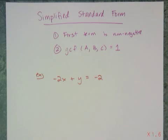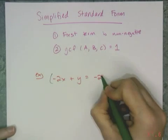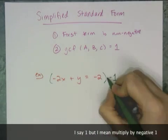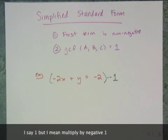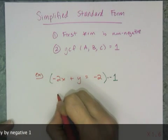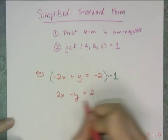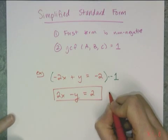And in order to change the signs of an equation, you multiply the entire equation, or you divide the entire equation, by negative 1. And in doing so, it swaps all the signs. And so that negative 2x becomes a positive 2x, that plus y becomes a minus y, and that negative 2 becomes a 2, and this is now standard form.